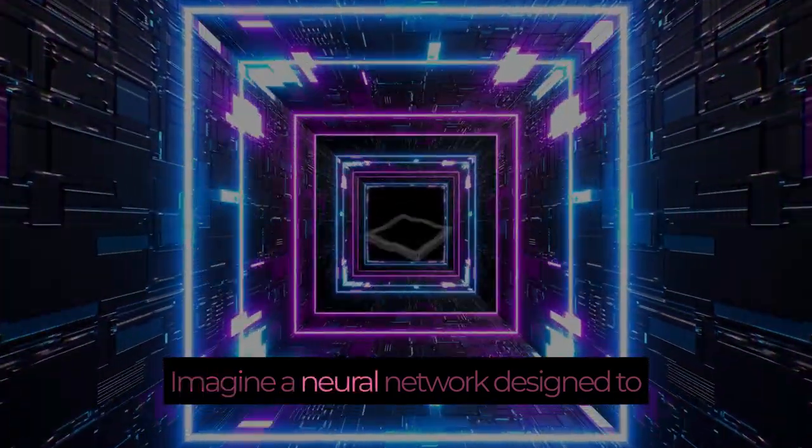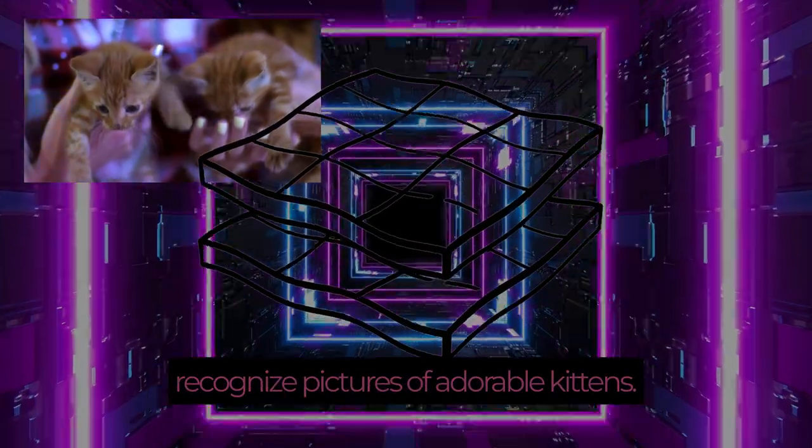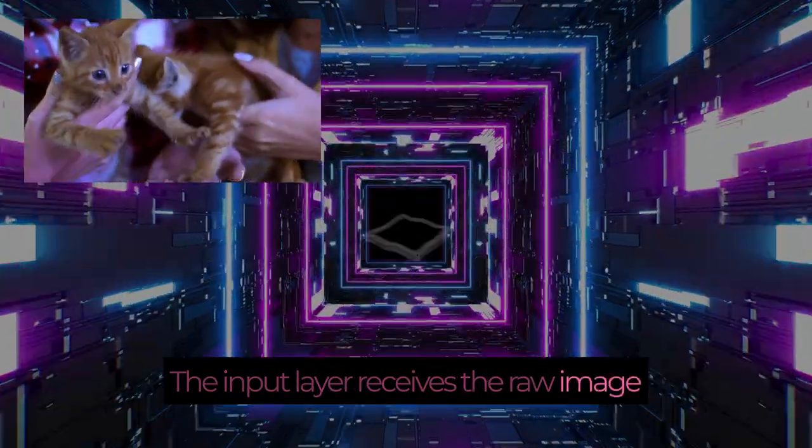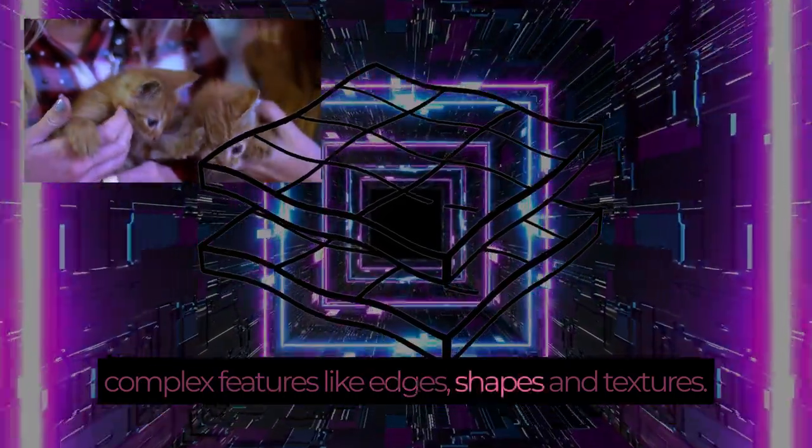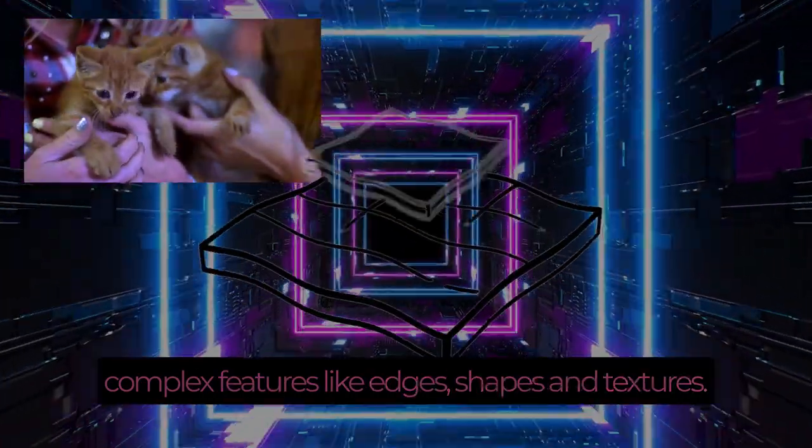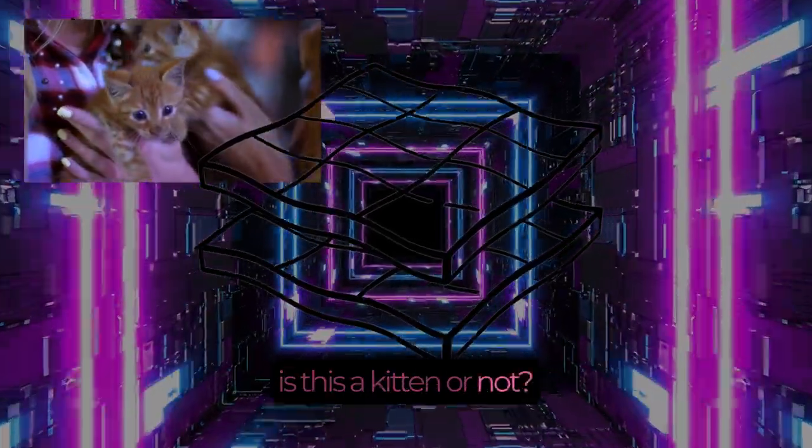Imagine a neural network designed to recognize pictures of adorable kittens. The input layer receives the raw image data, and each successive layer extracts more complex features, like edges, shapes, and textures. The final layer makes the grand decision: is this a kitten or not?